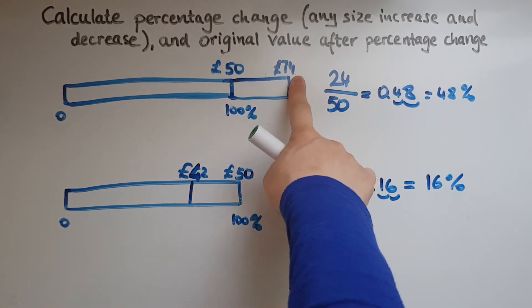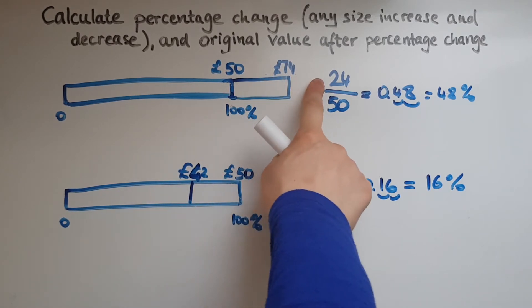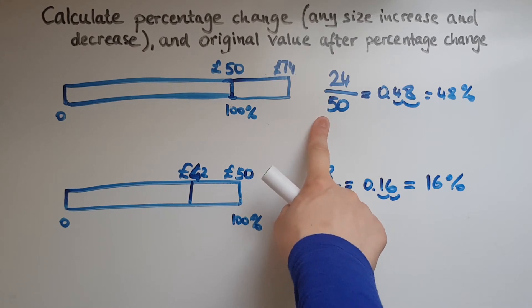So that was an increase, 74 pounds. What was the original price? It was 50. So what's the difference between them two? It was 24. Out of the original price.